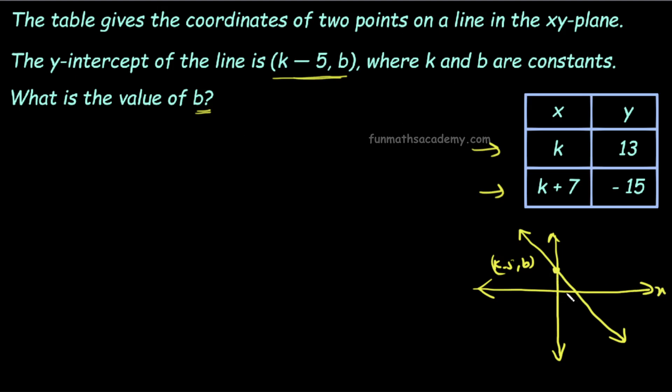X value is 0 at this point. Then k-5 is 0. So k-5 equals 0, which means k equals 5.